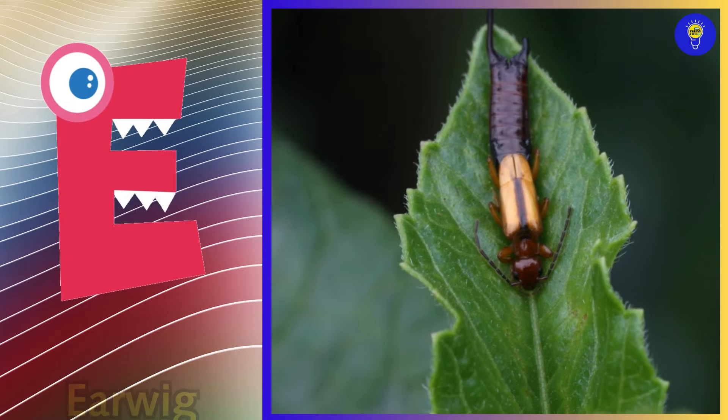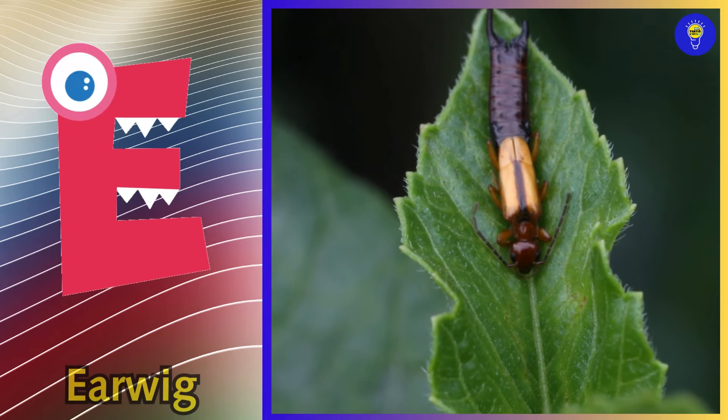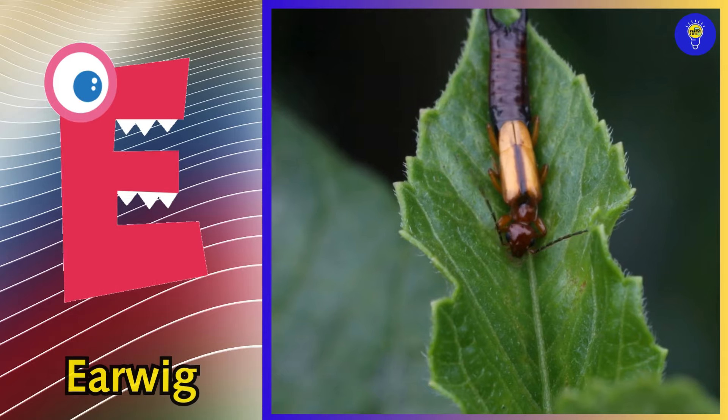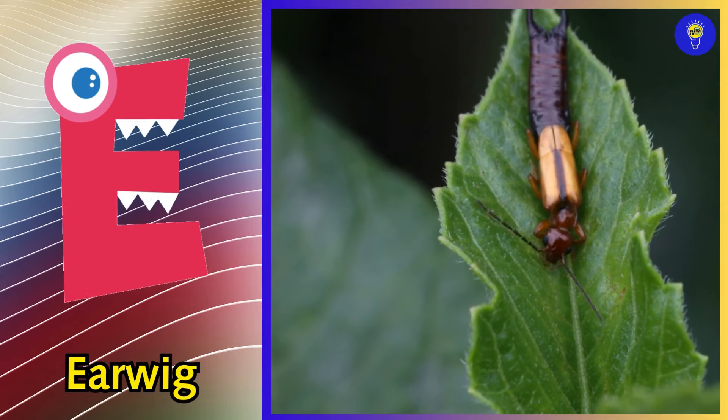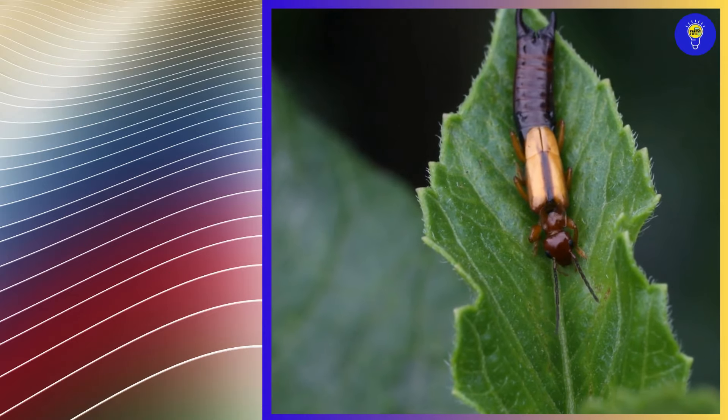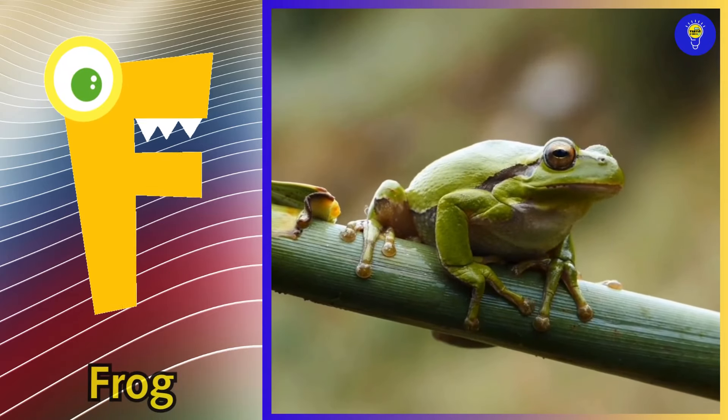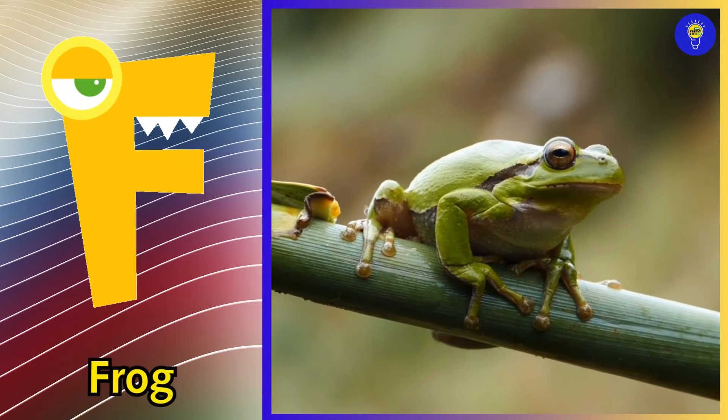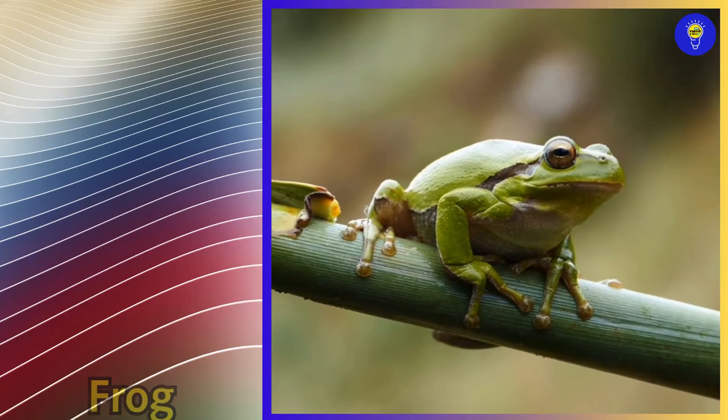E is for earwig. E, e, earwig. F is for frog. F, f, frog.